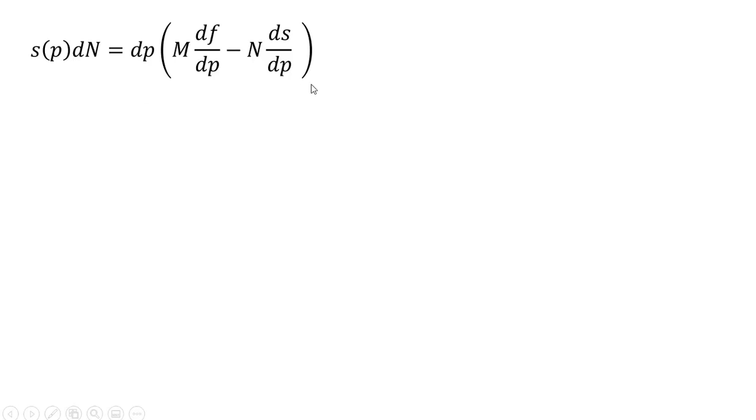Just rewriting that last step. And now, dividing through, I'm going to take what I have in parentheses on the right-hand side and divide both sides of the equation by it. We're left with dp = s(p)·dN / (M·df/dp - N·ds/dp).